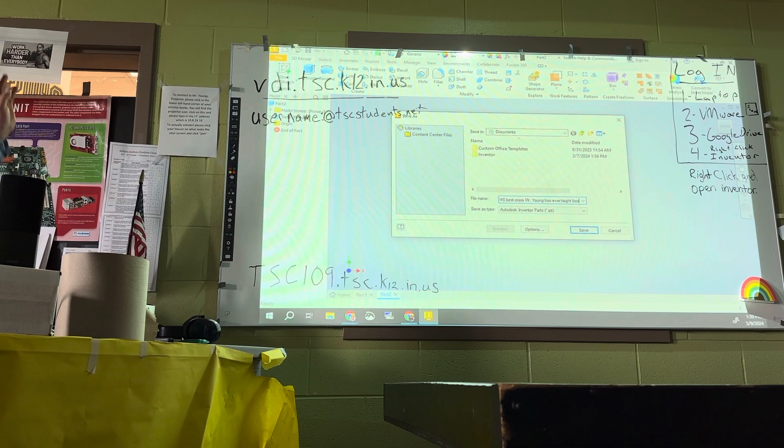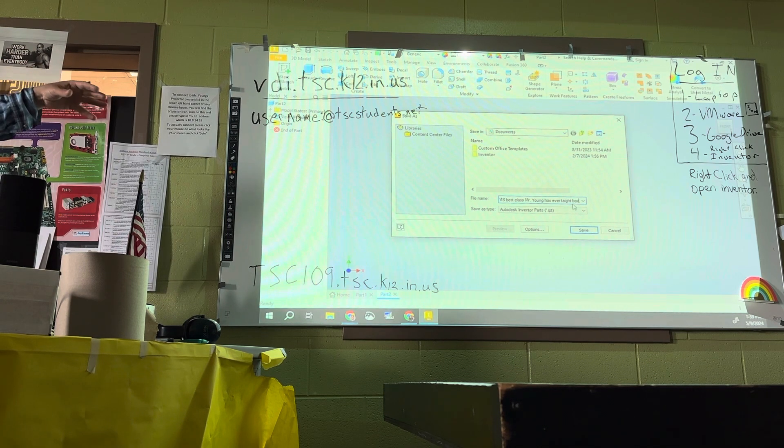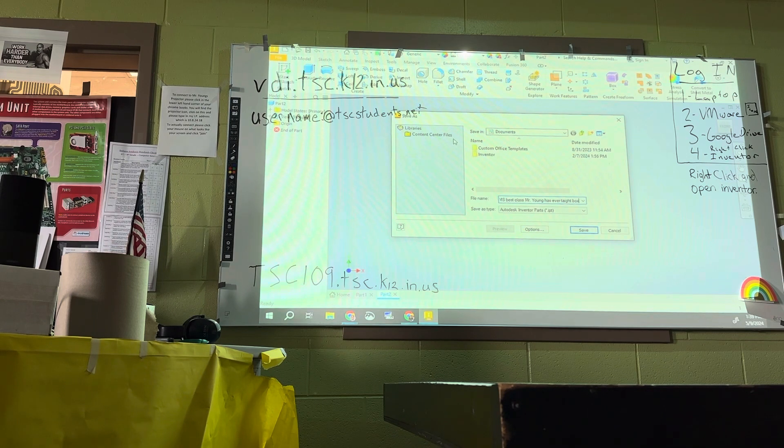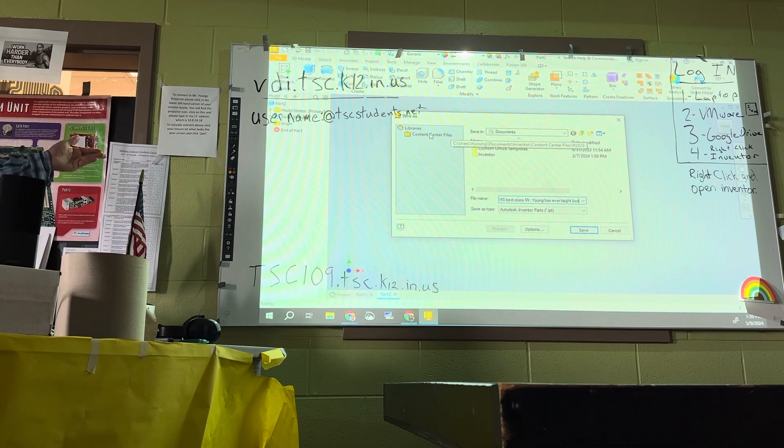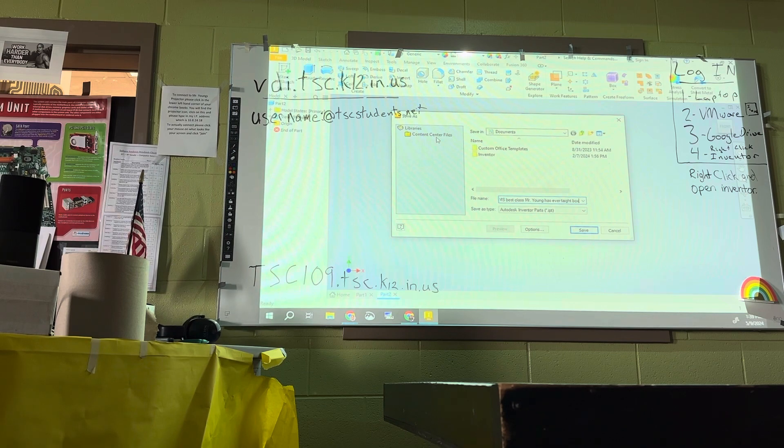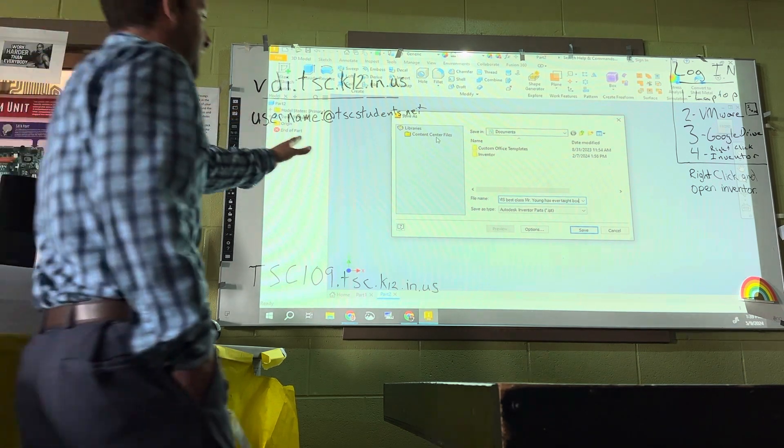Hold up, hold up. Let me finish. That's the best class I've ever taught box. That's what we're going to name it. Now, there's the important part. Before you save it, we want to leave it as this type, right? Inventor type right there. But, you have to find, of course, my Google Drive isn't on here. I don't have an HP laptop like you guys. But, you are going to have to save it to your Google Drive. And I will show you how to do that once we get there.